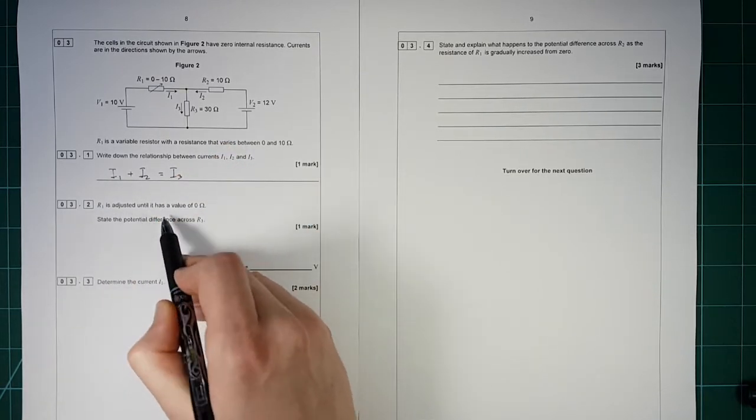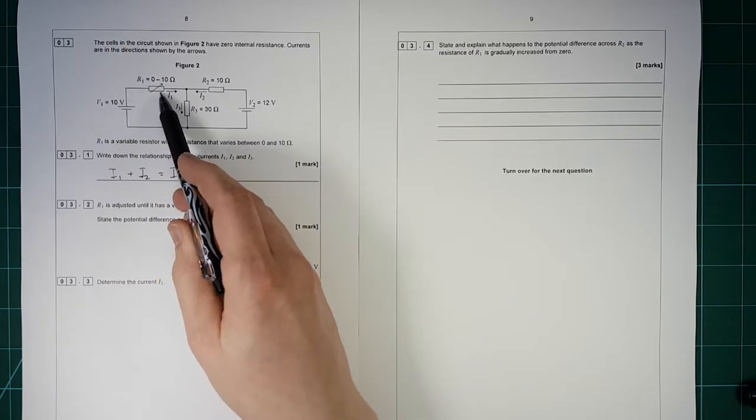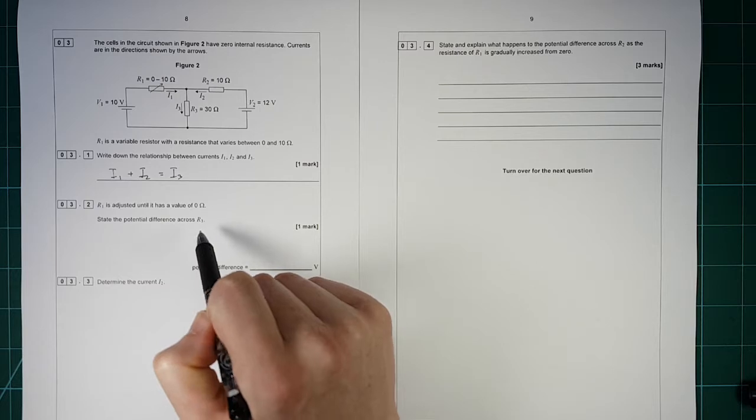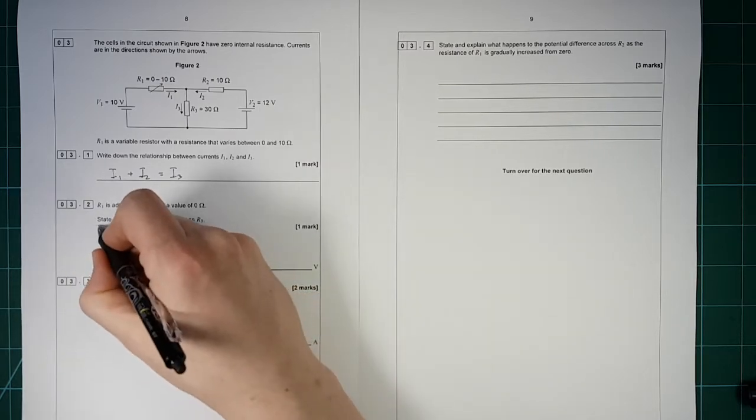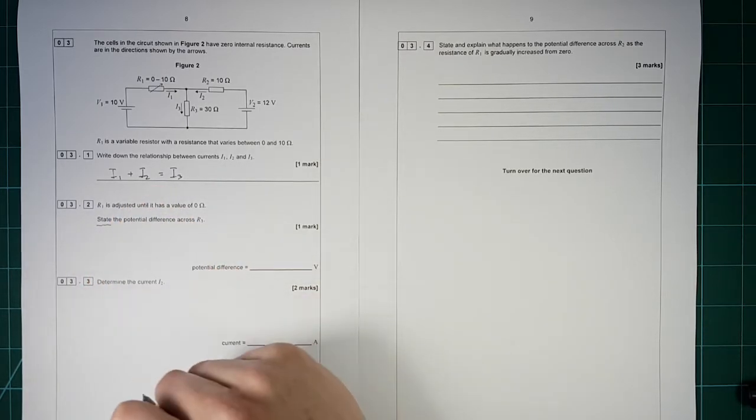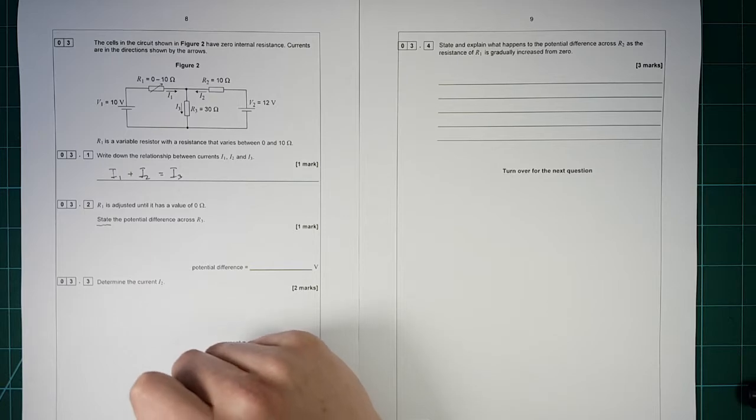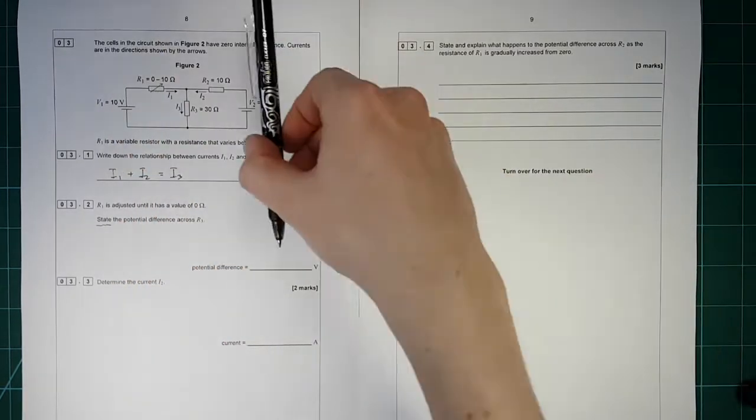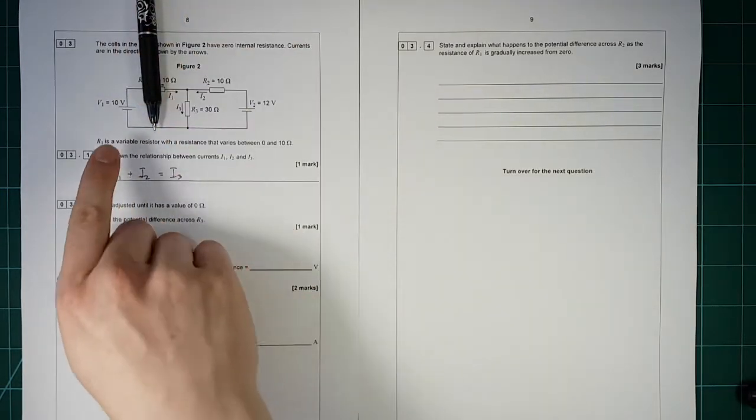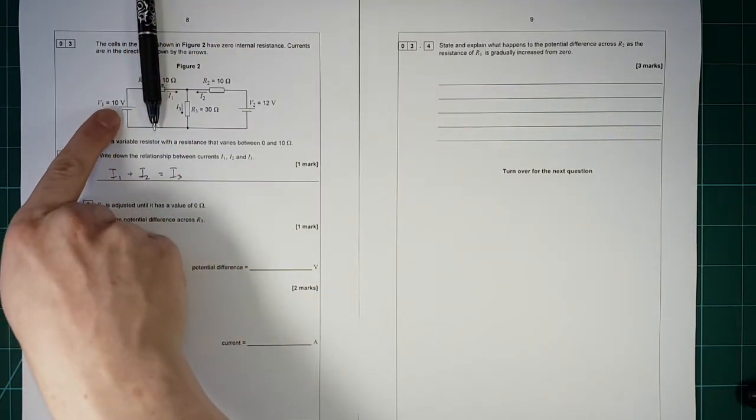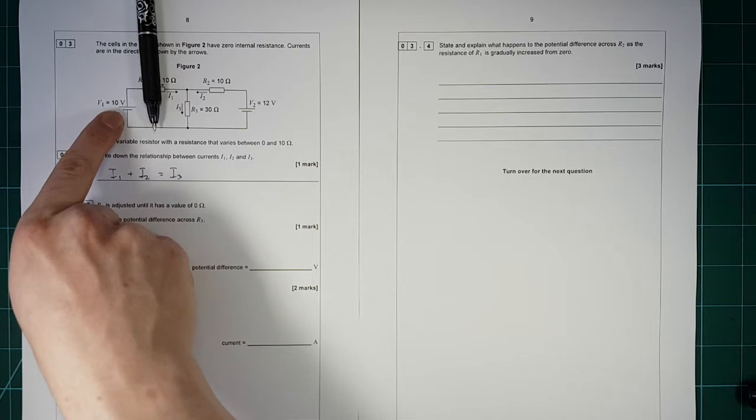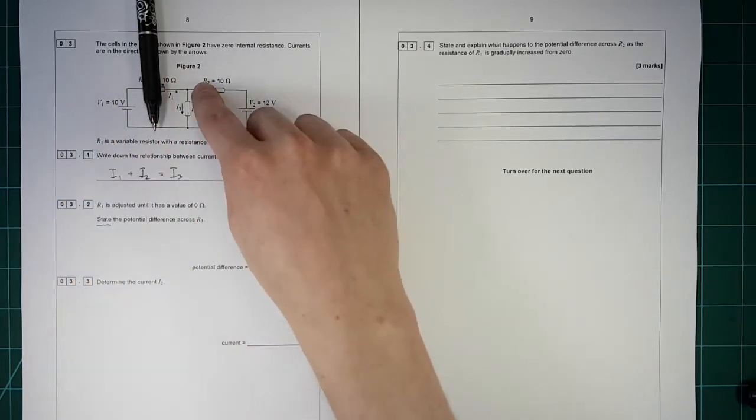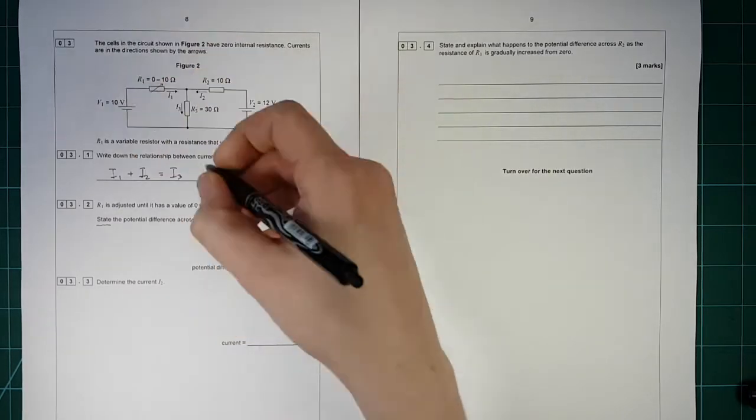R1 is adjusted until it has a value of 0, so that's basically a piece of wire there. State the potential difference across R3. So there's a clue here. Keyword state there means you should just be able to write down the answer. There's no calculation. Well, if that is taken out of the picture there, that doesn't exist. You simply have a circuit which has a power supply here, no internal resistance. So it's got 10 volts. All that 10 volts must be dropped across there, so it's got to be 10.